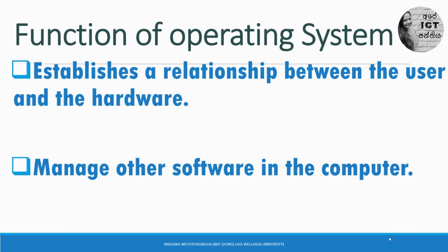Within a computer, the operating system plays a major role and has many functions to perform. The first function is: it establishes a relationship between the user and the hardware. The second function is: it manages other software in the computer. The operating system is itself a software, but it can manage other software in the computer.